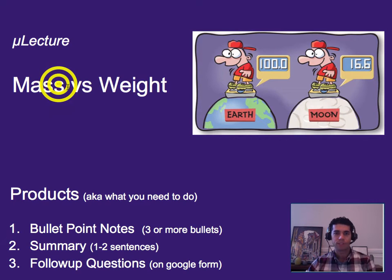Hi, I'm Ben Canning. This microlecture is on mass versus weight. As always, you need three or more bullet points worth of notes, one to two sentence summary, and to do your follow-up questions on the Google Form.